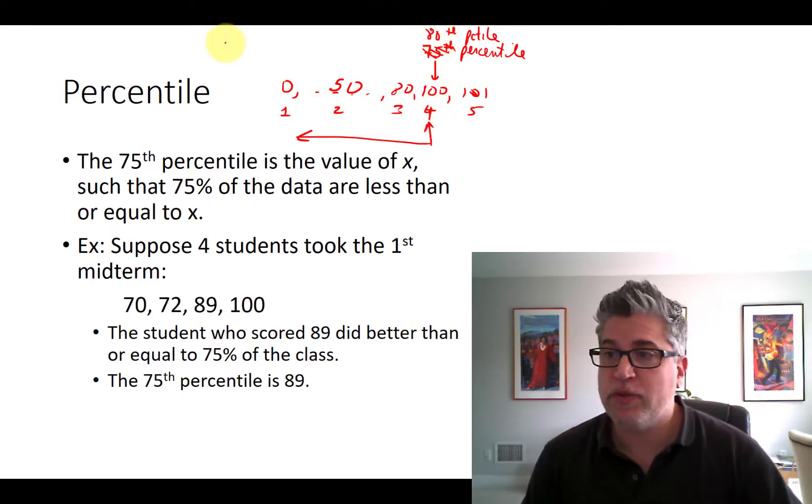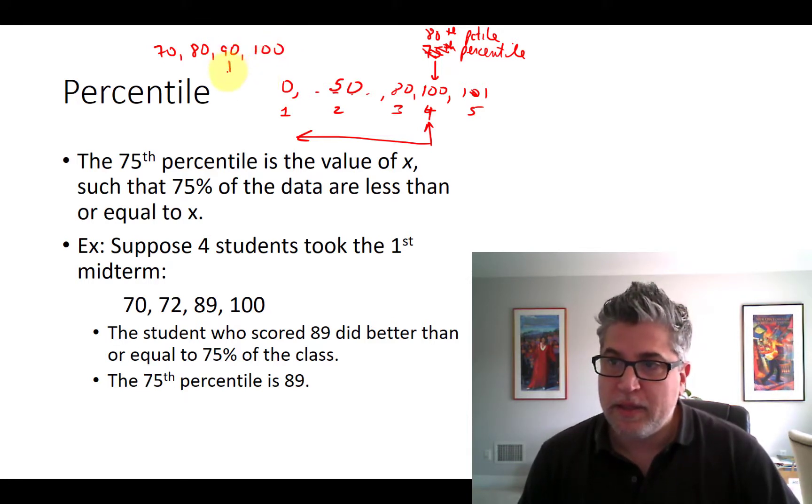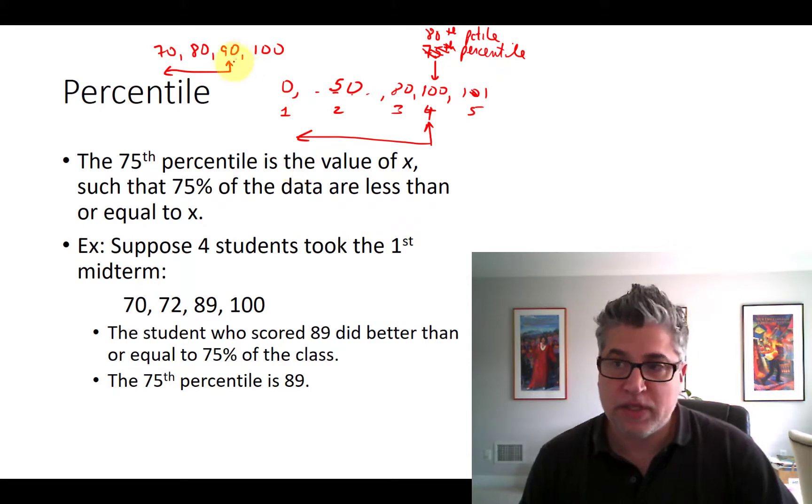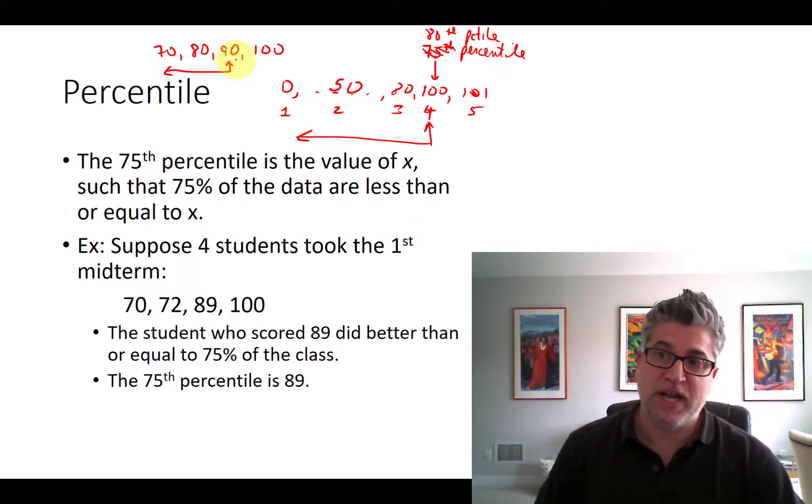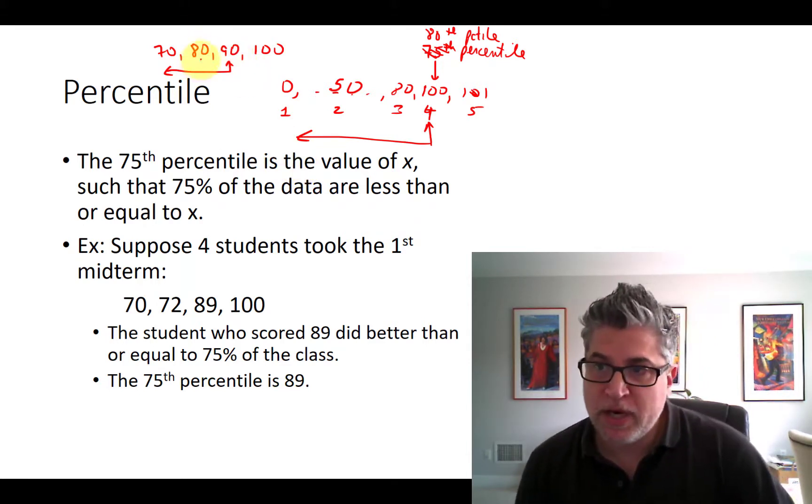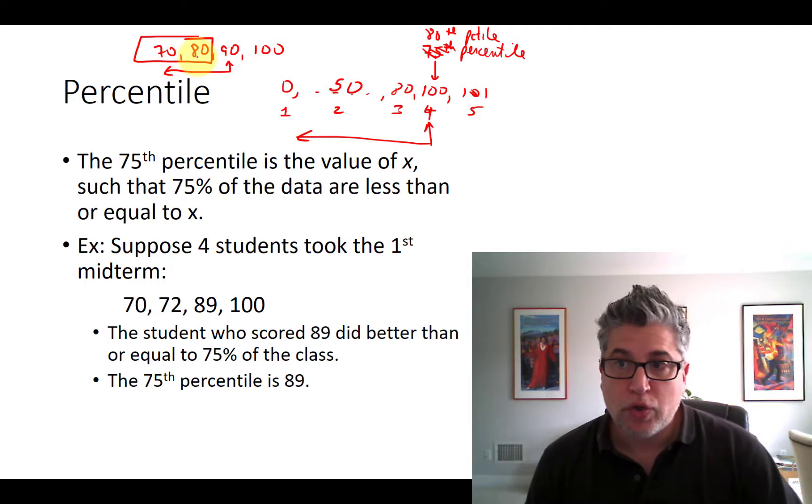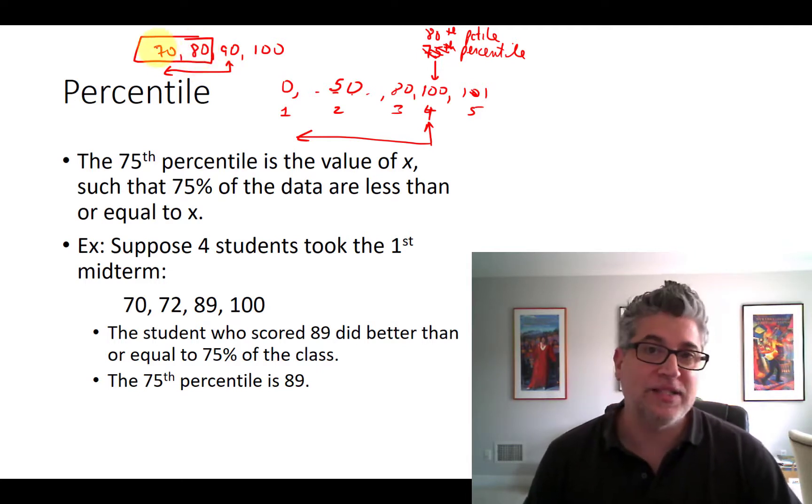If there were only four students, and somebody got 70, 80, 90, and 100, this person right here accounts for three out of the four. And so this person would be the 75th percentile score. This person here only scored in the 50th percentile because two people scored 80 or less.